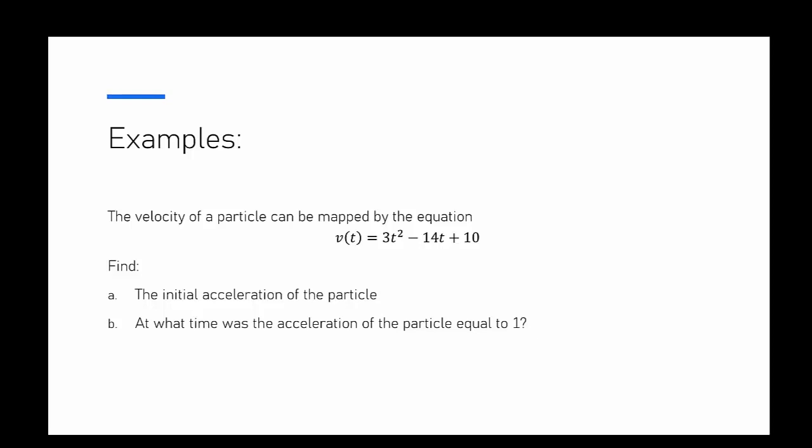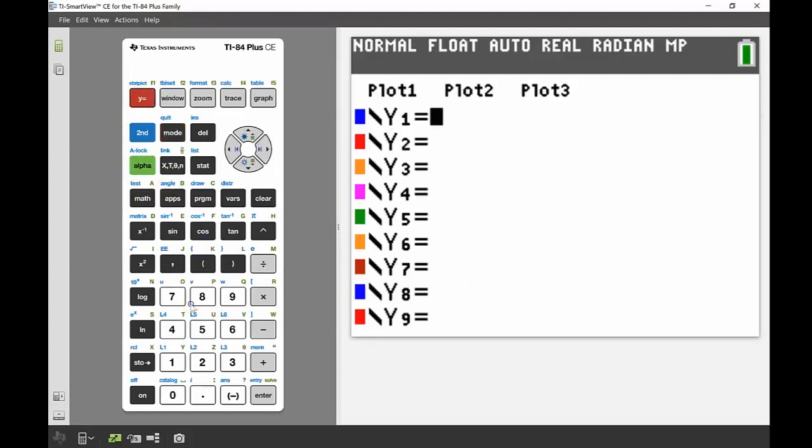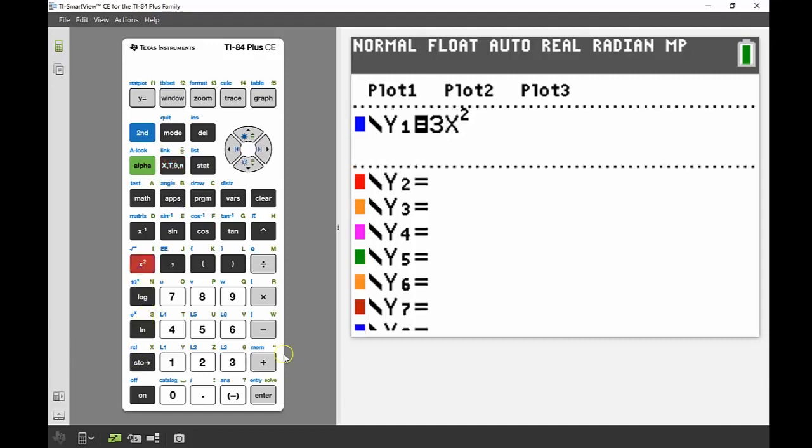I'm going to bring up my calculator and enter my equation into y1. So 3 - now in our situation our variable is time but we can just interchange that with our x variable that we graph with. So 3x² - 14x + 10.